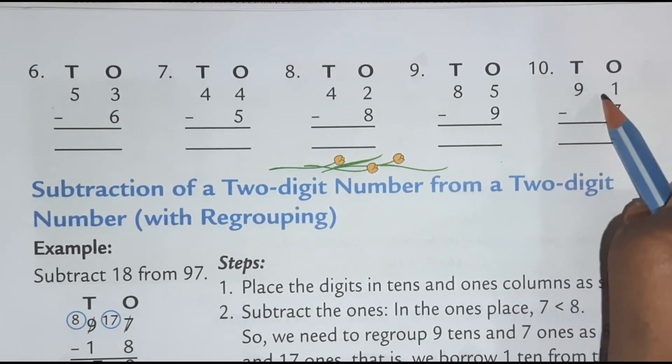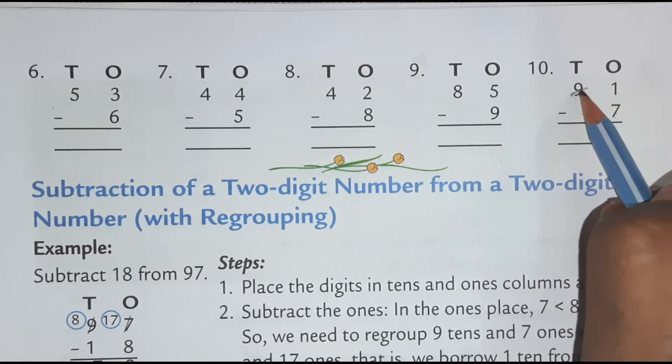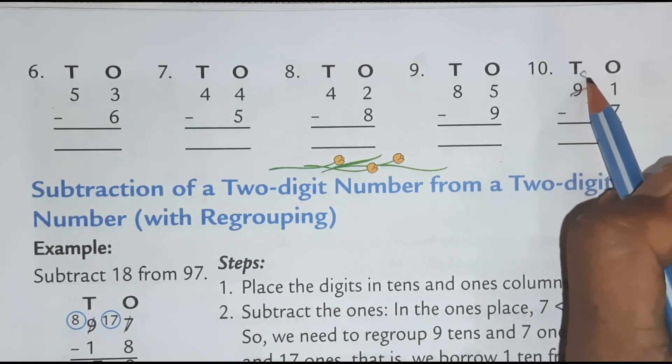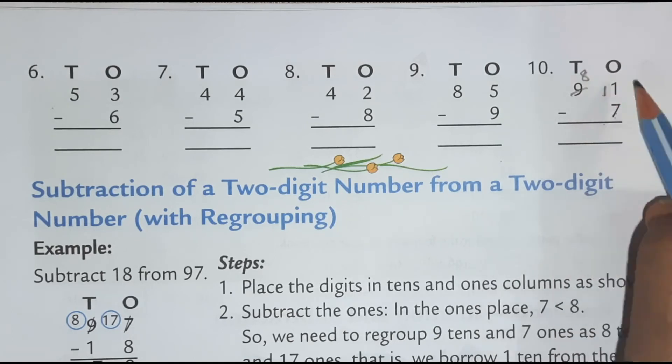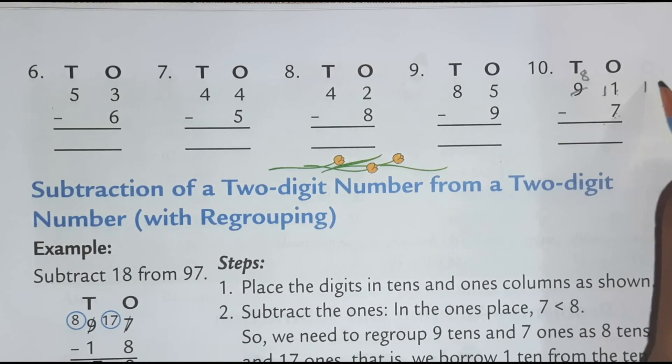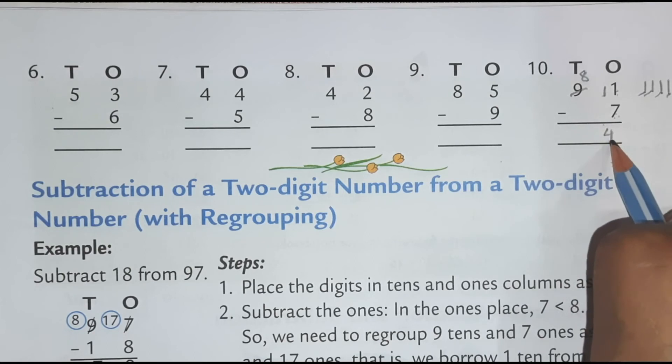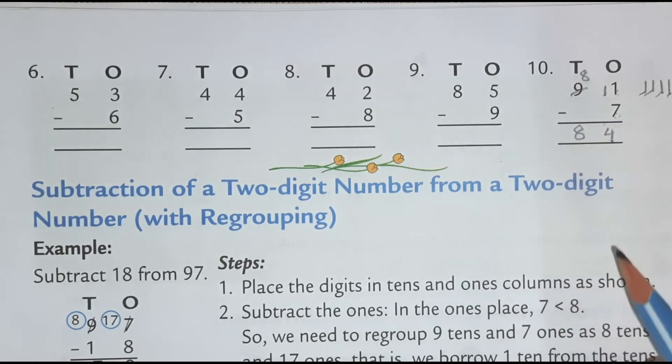So this is 91 minus 7. So 91 minus 7 how much is this? 1 is less than 7. So we will borrow from the 10s place. So this 9 minus 1 will become 8. And 1 10 will come here and it will become 11. So 11 minus 7. So how you can do by forward counting? 7 in the mouth. 8, 9, 10, 11. So how many numbers? 1, 2, 3, 4. So you can write here also like this. 11 minus 7 is 4. 8 minus 0 is 8.